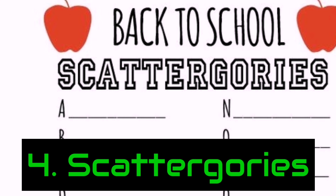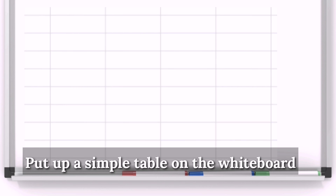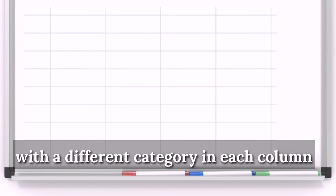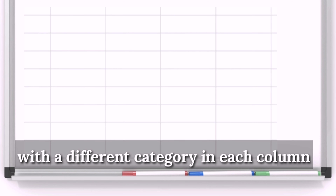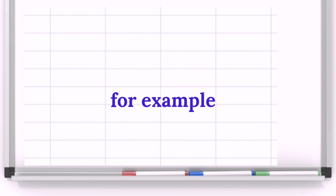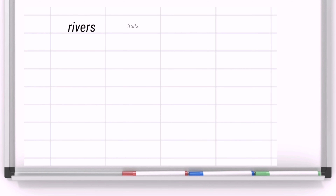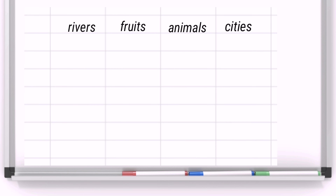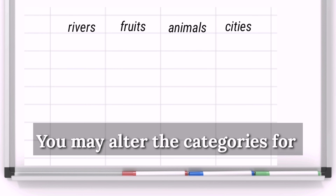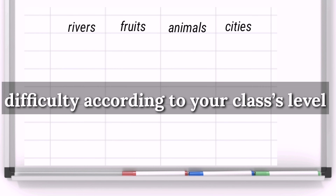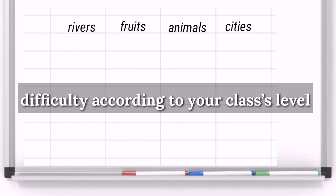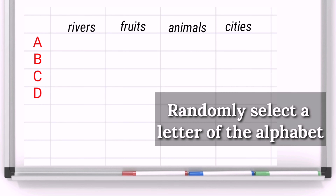Number 4: Scattergories. Put up a simple table on the whiteboard with a different category in each column. For example, rivers, fruits, animals, or cities. You may alter the categories for difficulty according to your class's level.